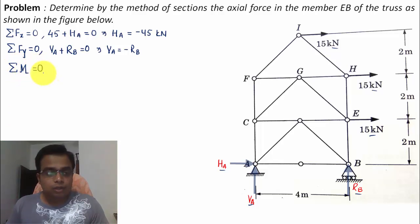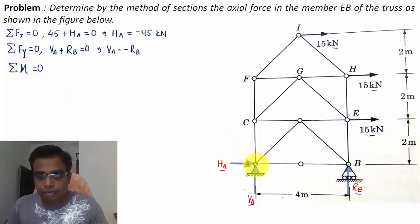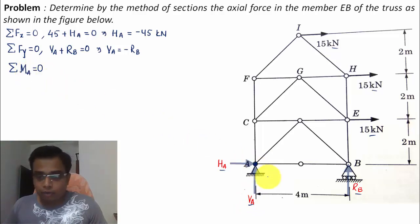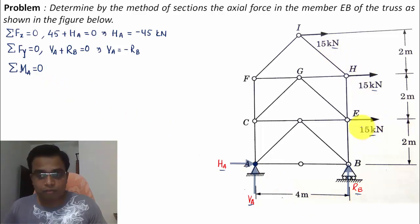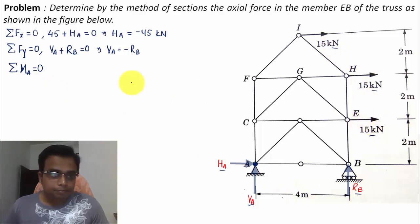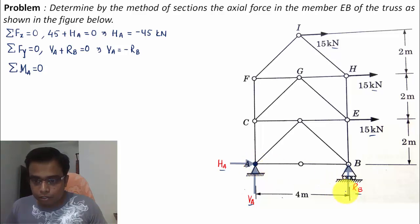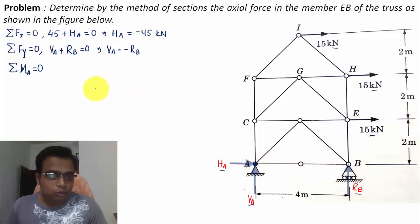Now for the third and most important equation of equilibrium: moment about a specific point equals zero. We take the moment about point A, because taking the moment there gives a single equation and the forces HA and VA will not come into the picture as they pass through point A. The forces remaining are RB and the three 15-kilonewton forces.